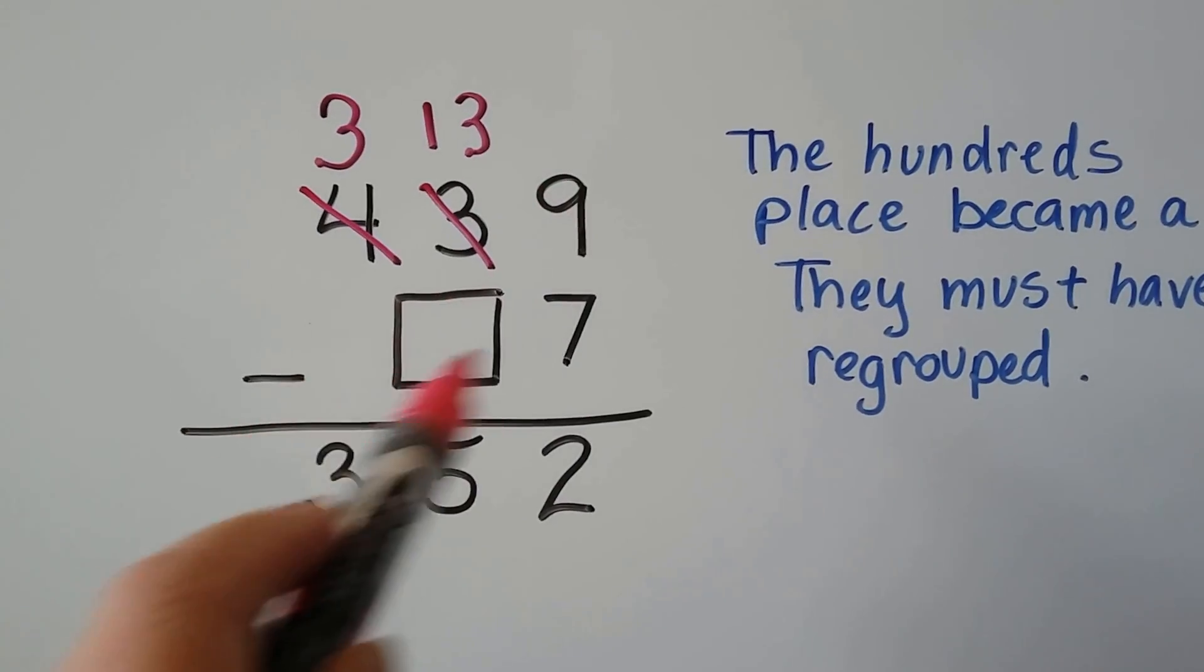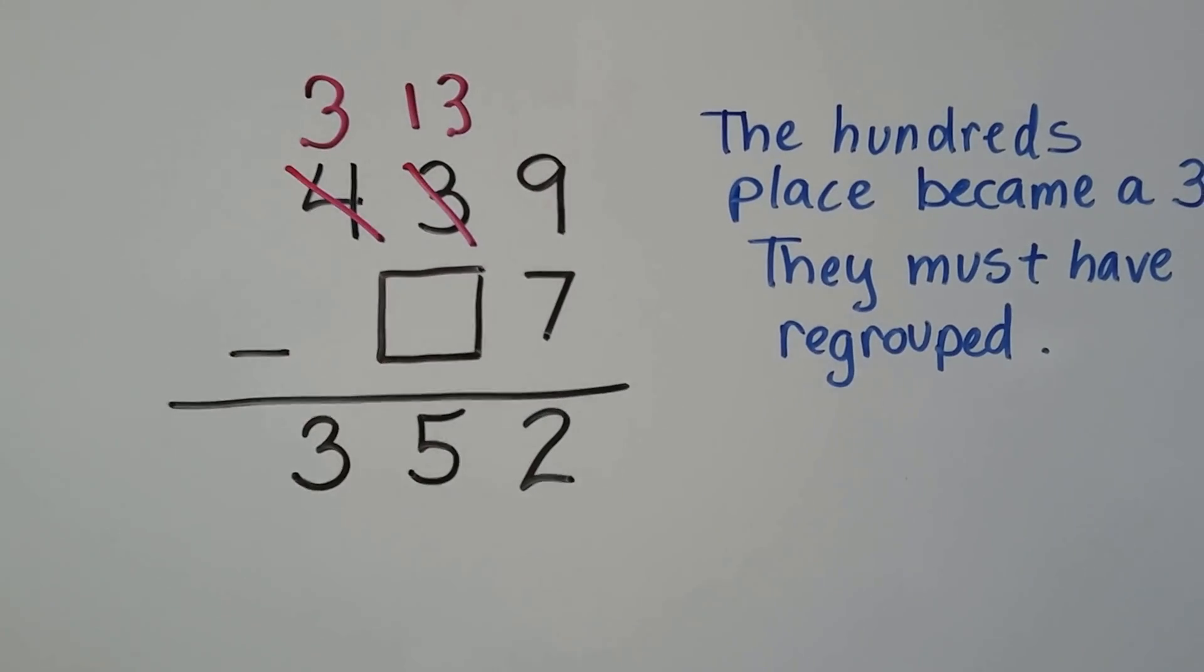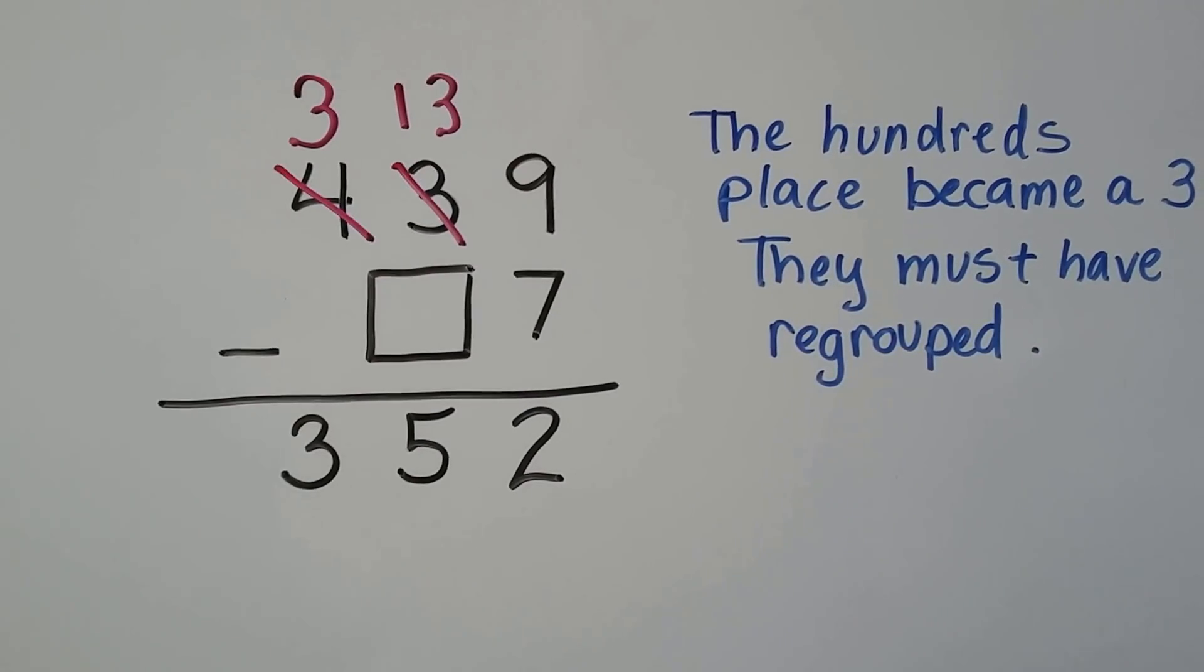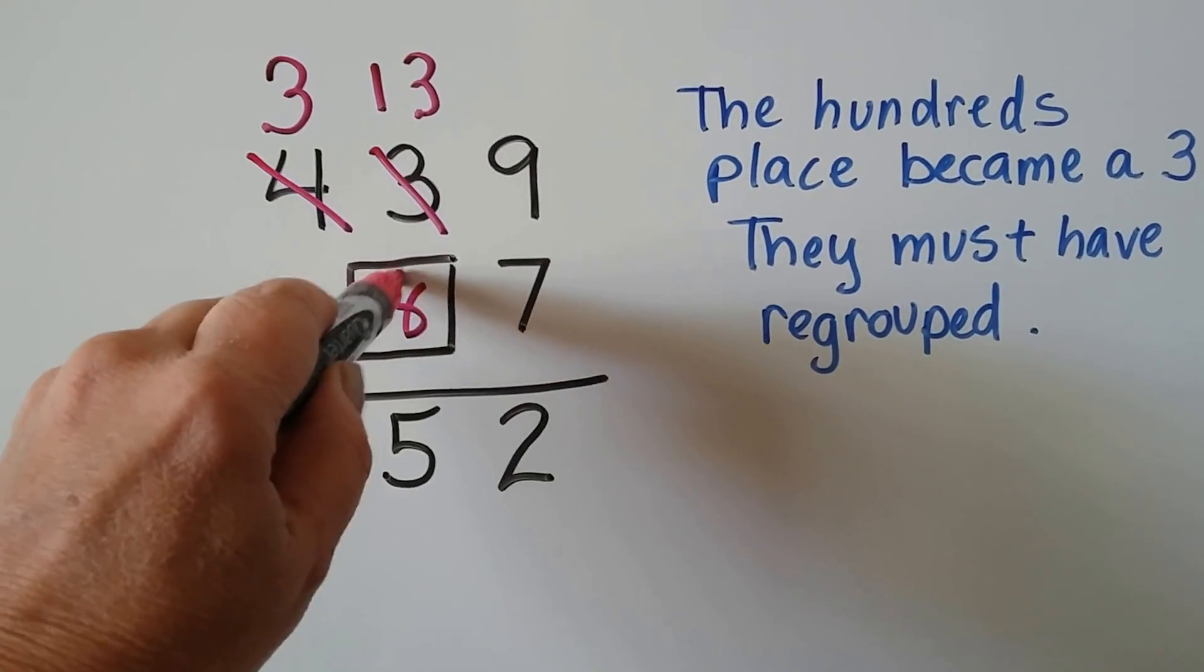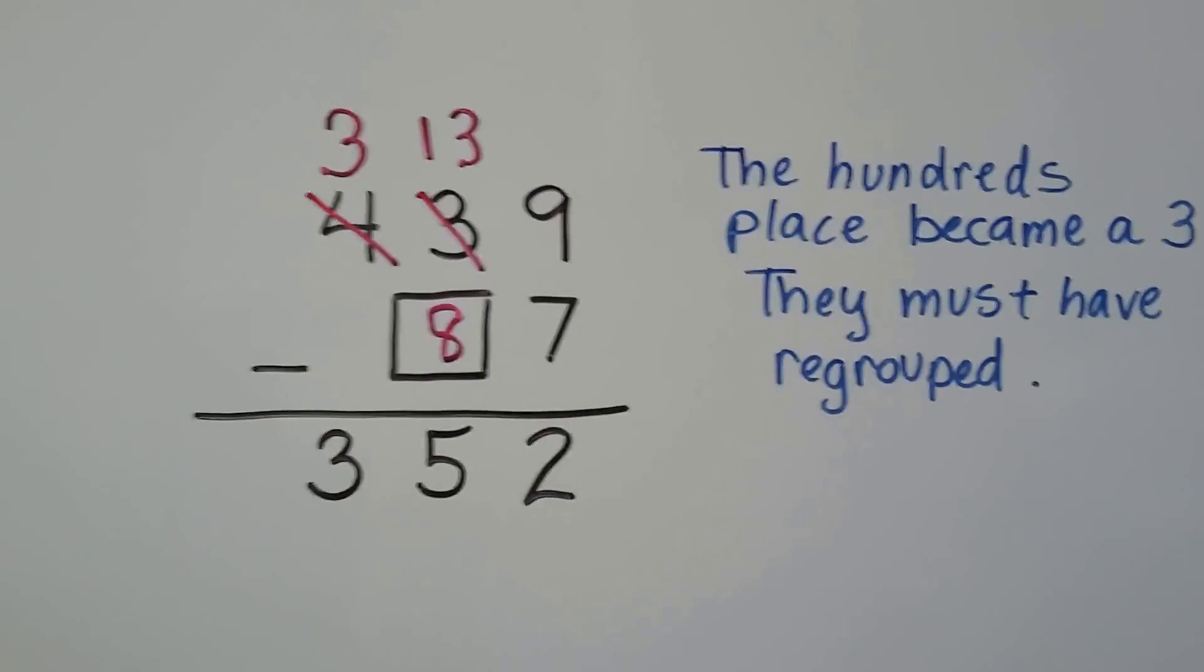We do 9 minus 7. That's a 2. That worked. 13 minus something is 5. And 13 minus 8. So we know the missing number is an 8. And then the 3 drops down.